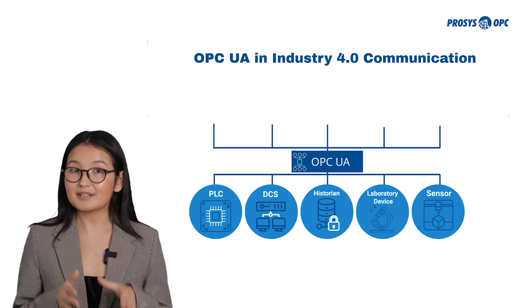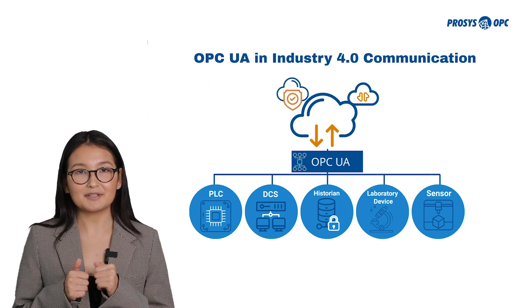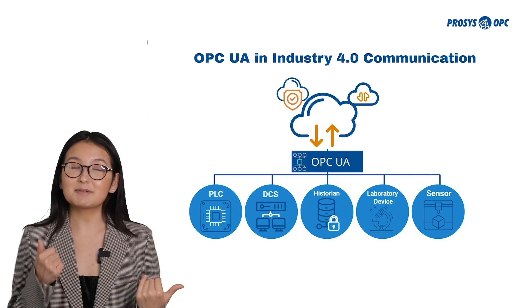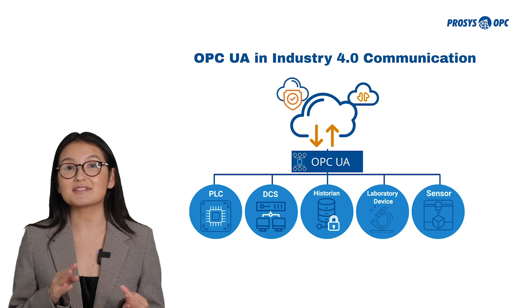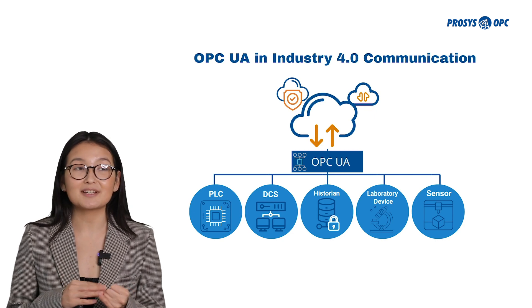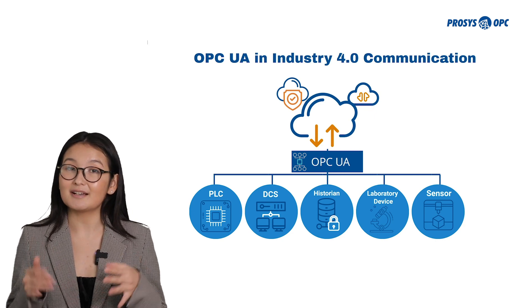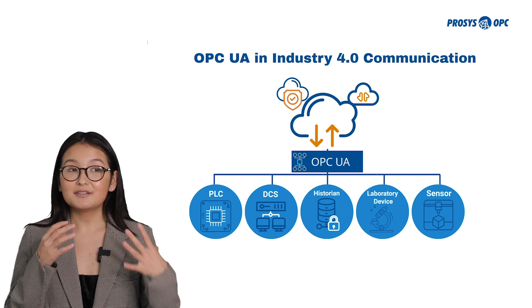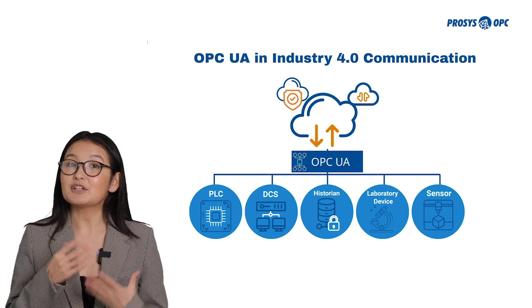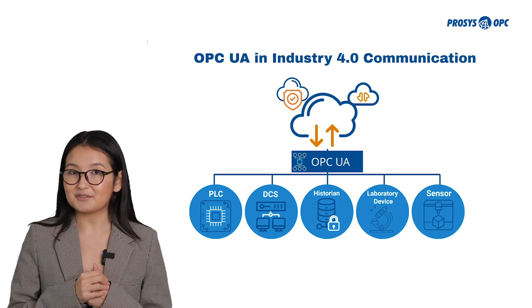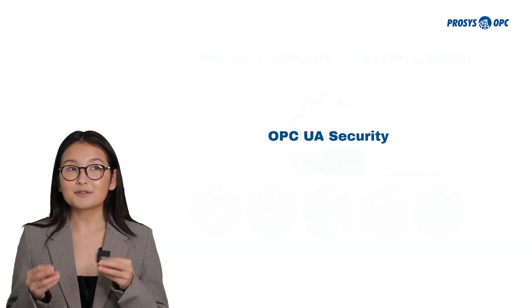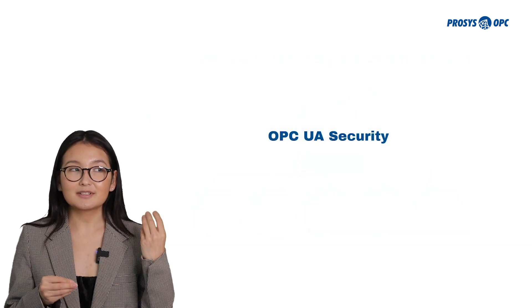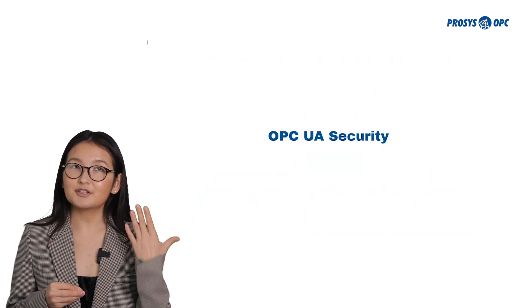Data exchange to the cloud is also becoming quite a trend, and big players such as SAP, Cumulosity, Microsoft, Amazon, and many others integrate with OPC UA and show that it is ready for that.